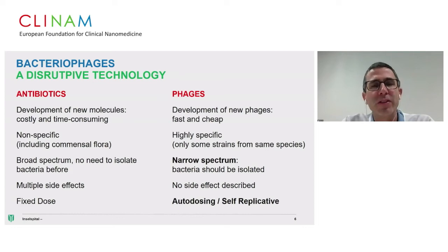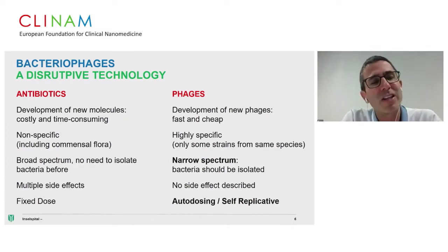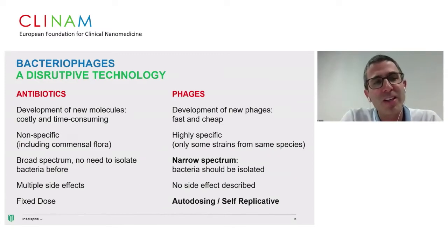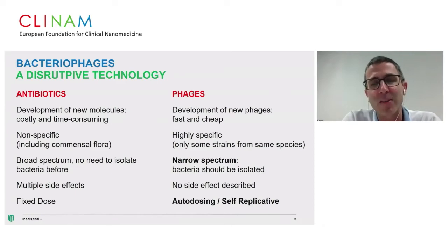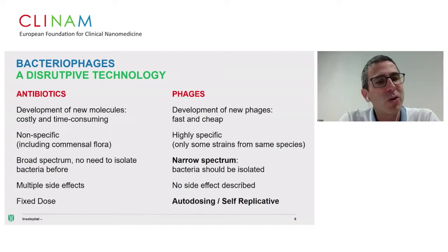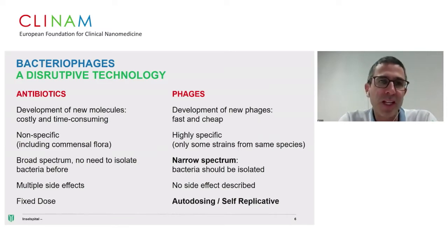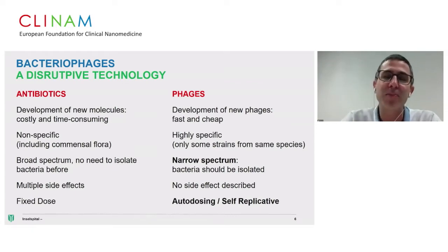Comparing antibiotics and phages: developing new antibiotic molecules is currently costly and time-consuming, whereas phage development is fast and cheap. Antibiotics are non-specific and also target the commensal flora, causing multiple side effects, whereas phages are highly specific — targeting only certain strains within a species, giving them a narrow spectrum. The advantage is no side effects, but the narrow spectrum means you must isolate the bacteria to find the right phage for the right target. Antibiotics are given at fixed doses, whereas phages have a self-replicative autodosing effect that may be of clinical interest.